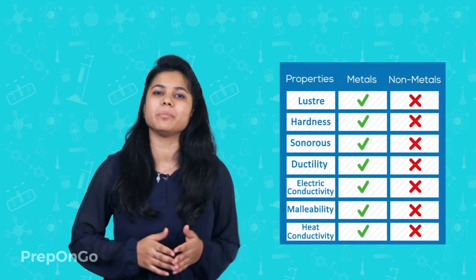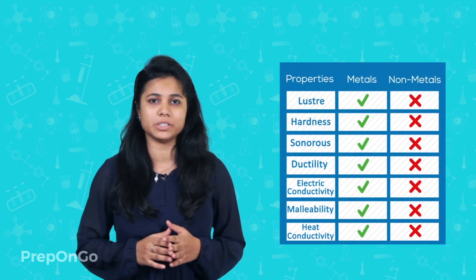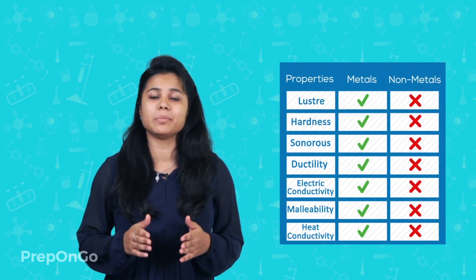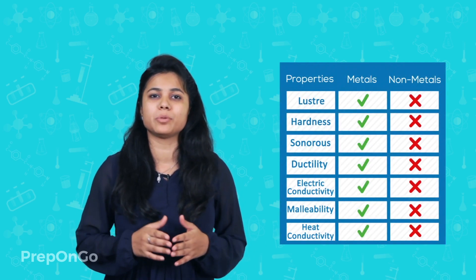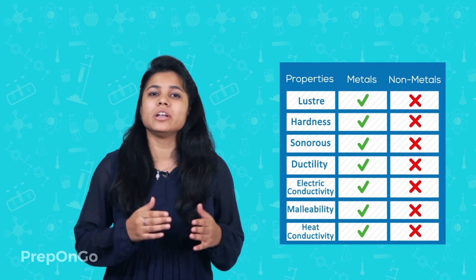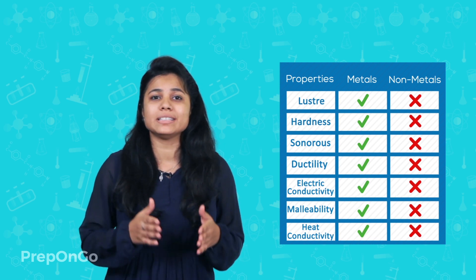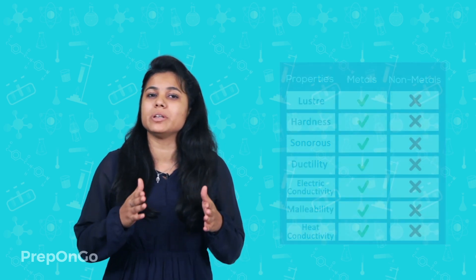Since we have seen the differences between metals and nonmetals on the basis of their physical properties, we can now move on to see the differences between metals and nonmetals on the basis of their chemical properties.